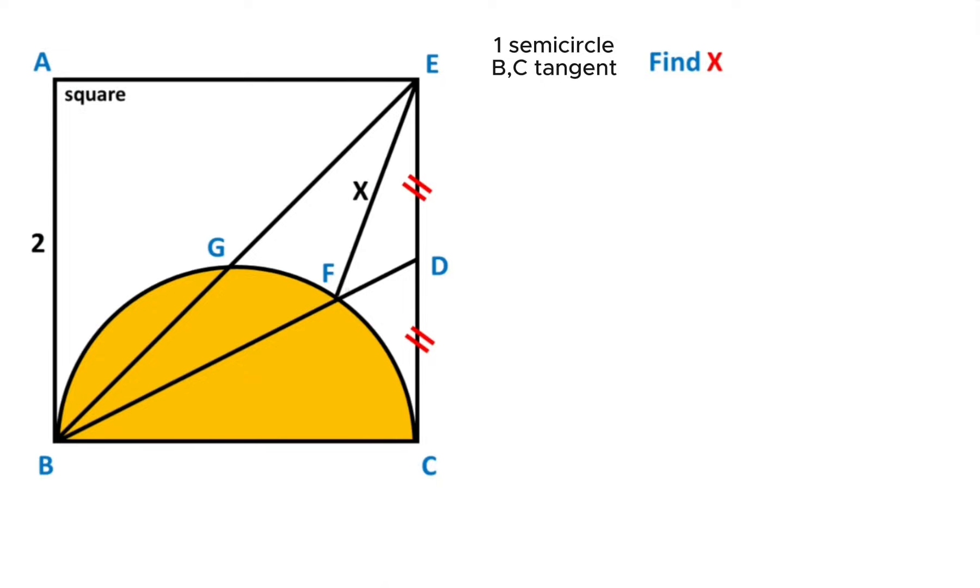First of all, notice that one side of the square is given two units, right? So this length is also two, and these two parts must be equal, one unit. After that, if we connect these two brains...